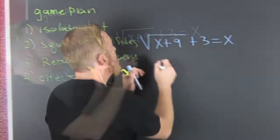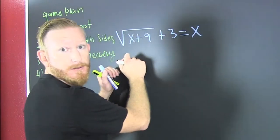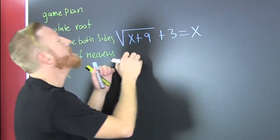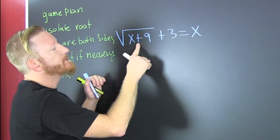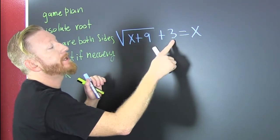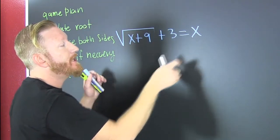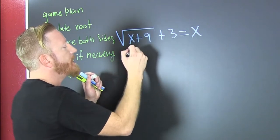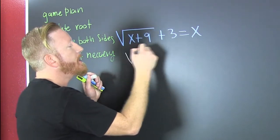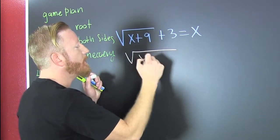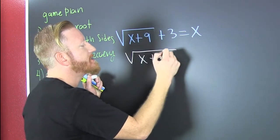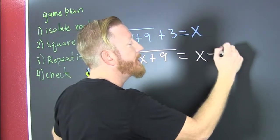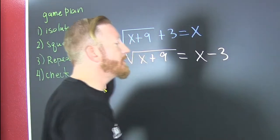So we got this equation: the square root of x plus nine, plus three, is equal to x. First step: isolate the root. So that's the square root of x plus nine equals x minus three.